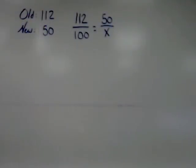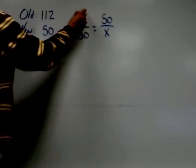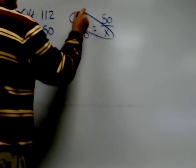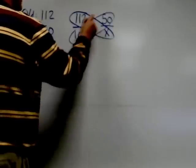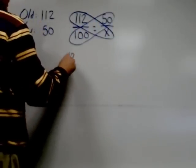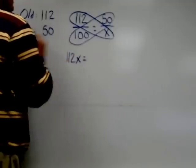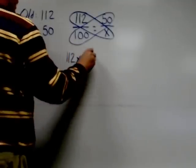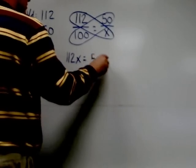The next step is to cross multiply and solve for x. So I have 112 times x and 50 times 100. 112 times x is 112x. 50 times 100 becomes 5000, and again we just add two zeros to the list.